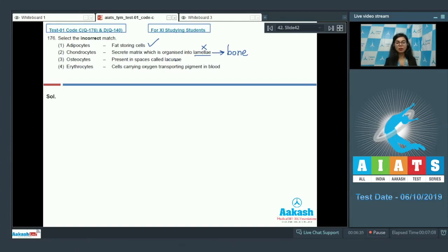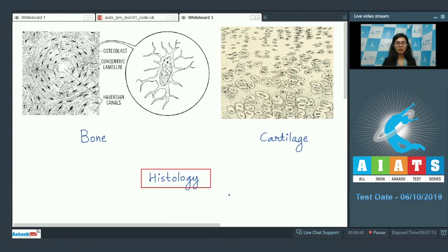Present in spaces called lacunae - that is correct. To understand options 2 and 3, let's look at the histological sections of bone and cartilage.